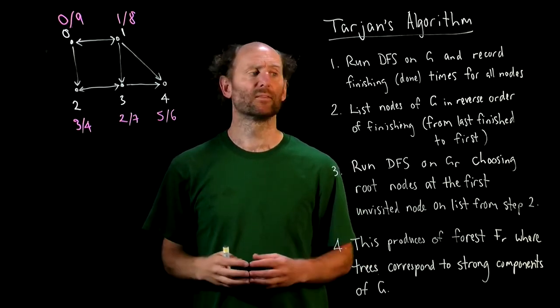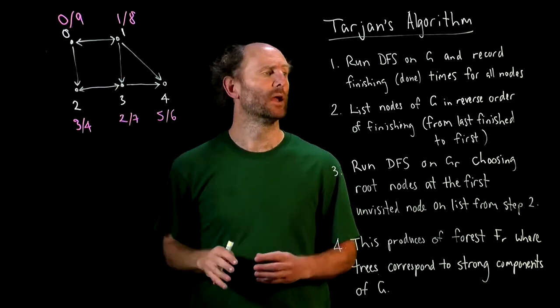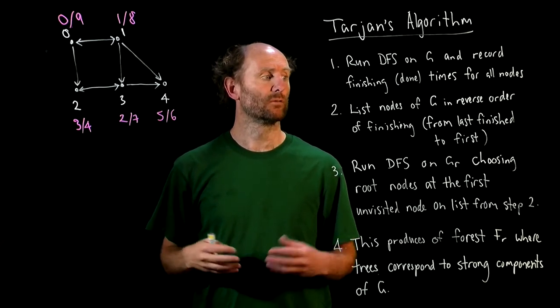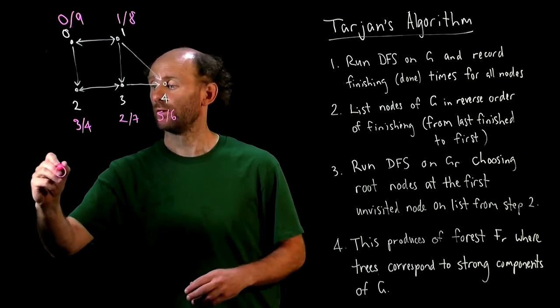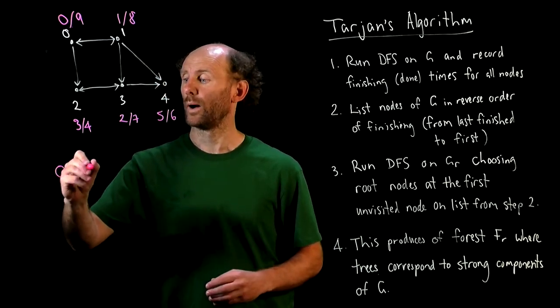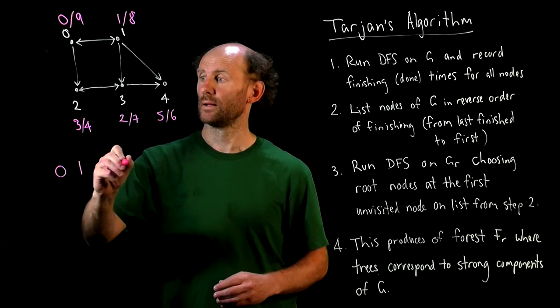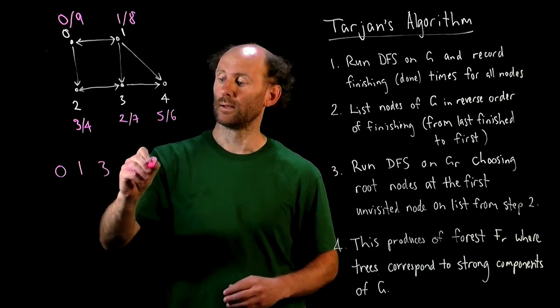So if we list our nodes of G in reverse order of finishing, from the last finish to the first finish, the last finish was 0, then 1, then 3, then 4, then 2.